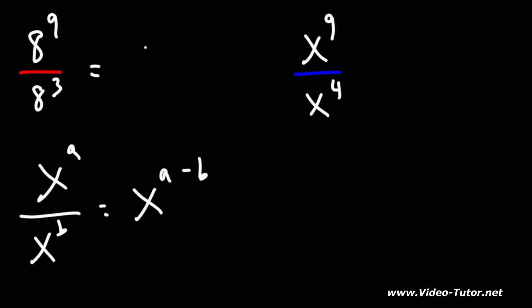So 8 to the 9 divided by 8 to the 3 is equal to 8 to the 9 minus 3, and 9 minus 3 is 6. So the answer is 8 raised to the 6th power.